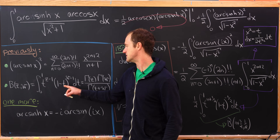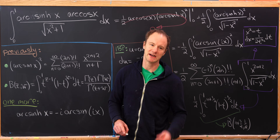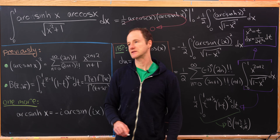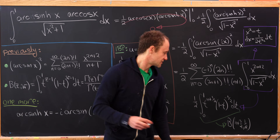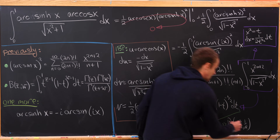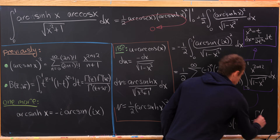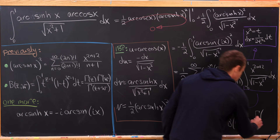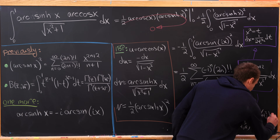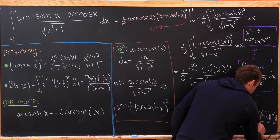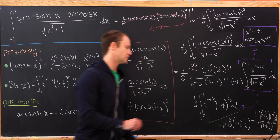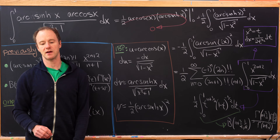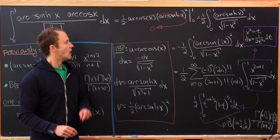In terms of the gamma function, that's gamma(n + 3/2) times gamma(1/2), all over gamma(n + 2), since n + 3/2 + 1/2 = n + 2.